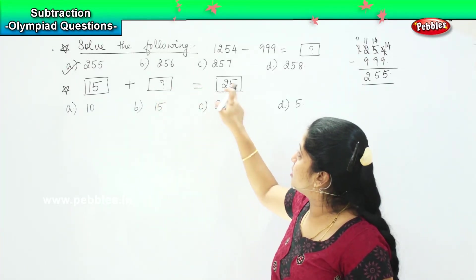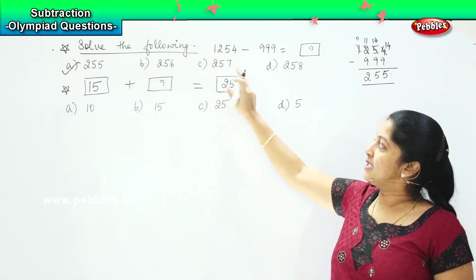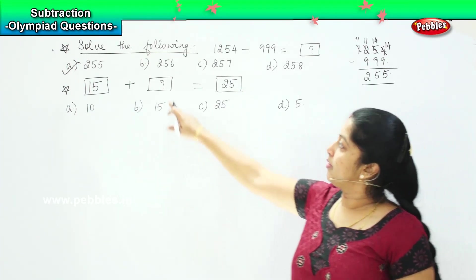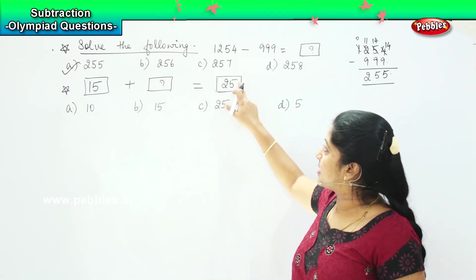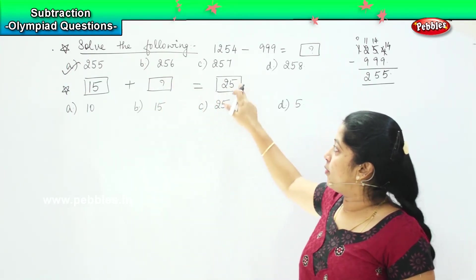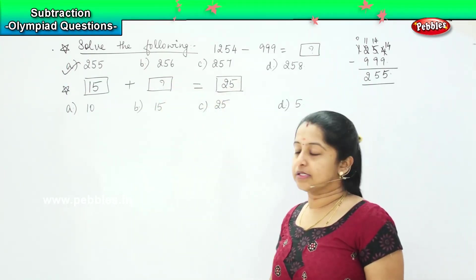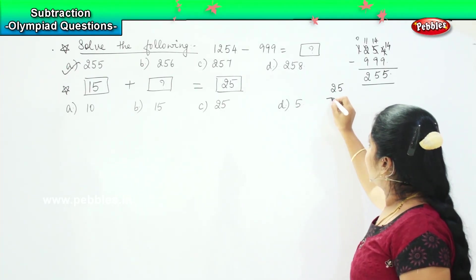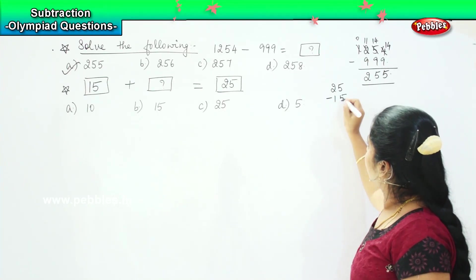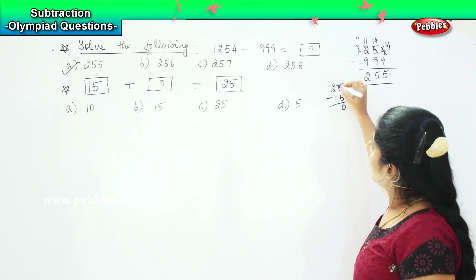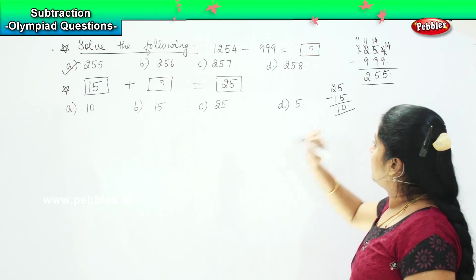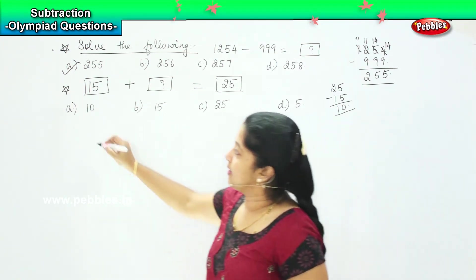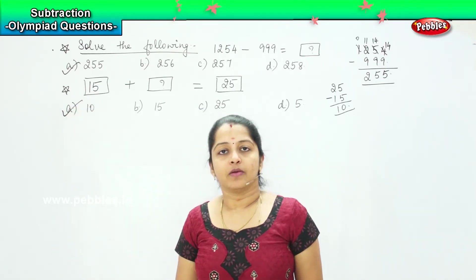What will I do in order to find this answer? So, if I subtract 15 from 25, I will get that answer. So, let us try it. So, the answer sum minus the addend 15. So, 5 minus 5 is 0, 2 minus 1 is 1. The answer is 10. Option A. 10 is the right answer.